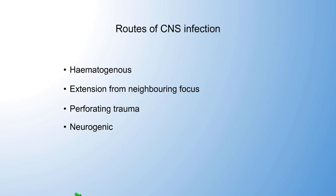Bacterial infectious disease doesn't play such a great role in small animals but we do occasionally see it. For fungal disease, it depends on where you're located - in southern Europe or certain areas of the US they're very prevalent, whereas in Germany or the UK I've not really seen any fungal CNS disease. What might occur occasionally are protozoal, rickettsial, or verminous disease. There are also miscellaneous diseases such as prions like FSE.